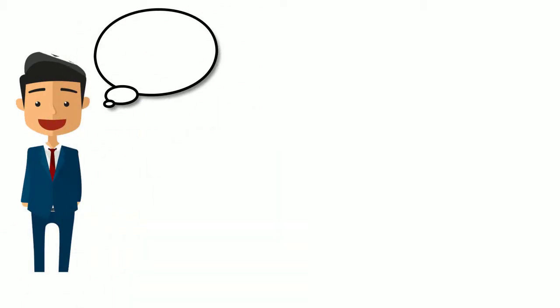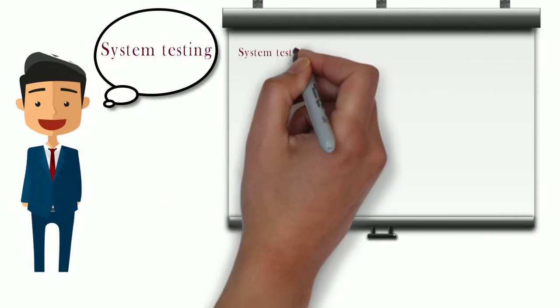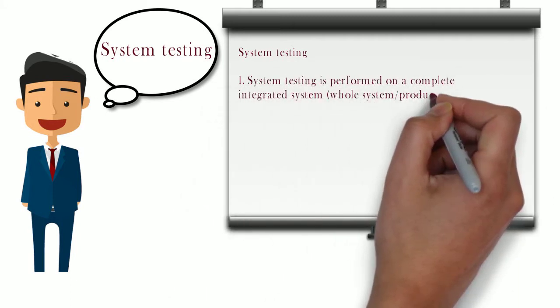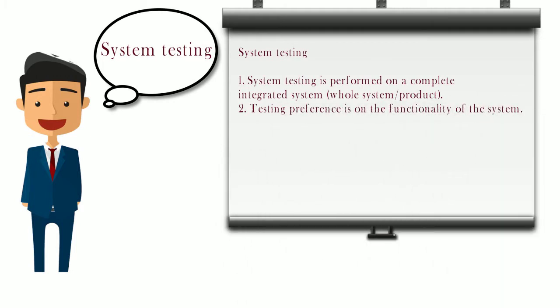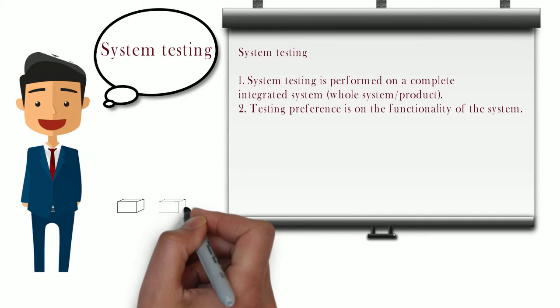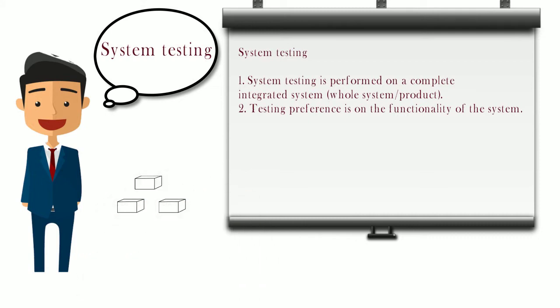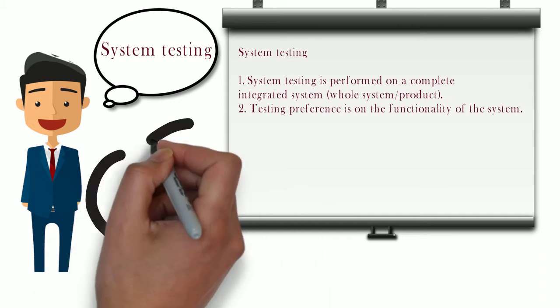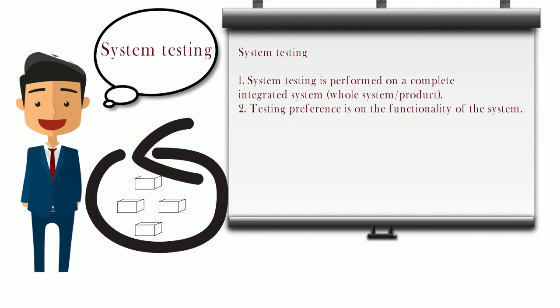The next test level is system testing, performed when all components are integrated. It is performed on a complete integrated system or whole product. Testing preference is given to the functionality of the system. If a project has one hundred components and all are integrated, system testing can begin. In our example, once all three components are integrated, system testing starts.